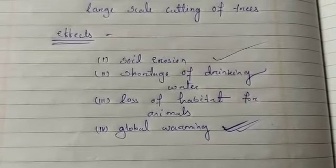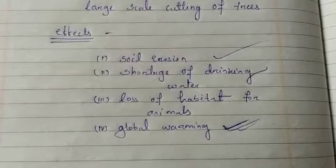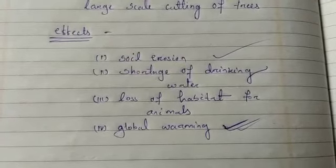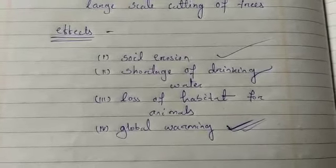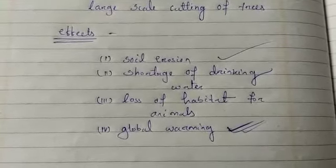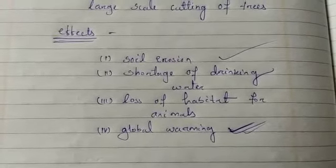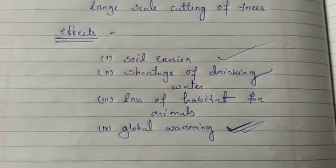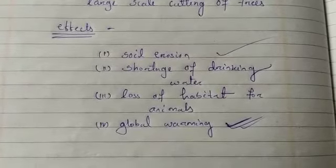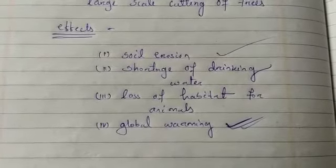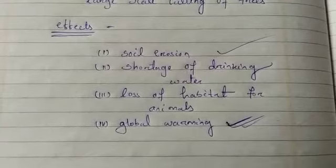This carbon remains stored in the forest ecosystem but can be released into the atmosphere when forests are burned or destroyed. Overall, the world's forest ecosystems are estimated to store more carbon than the entire atmosphere.